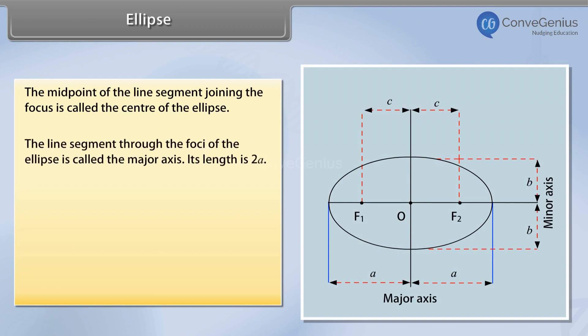The line segment through the foci of the ellipse is called the major axis. Its length is 2a. The line segment through the center and perpendicular to the major axis is called the minor axis. Its length is 2b.